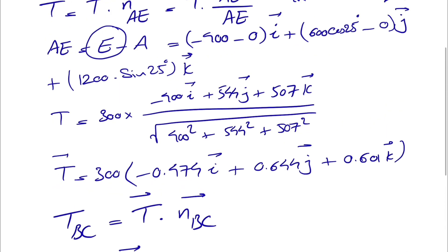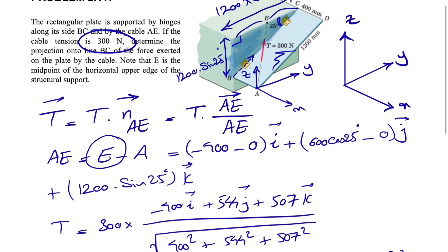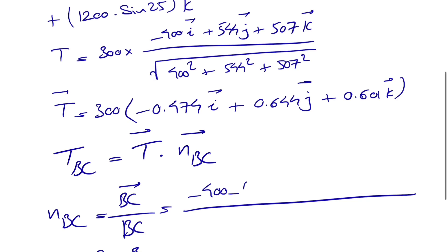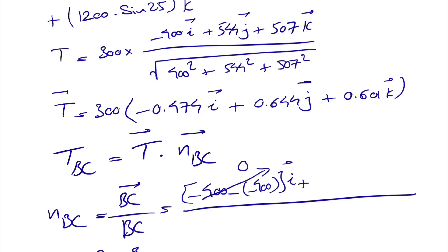Let's start with the x-component of point C. If we look, x of B and C are the same since they are in the yz-plane. So x_C minus x_B is minus 400 minus (minus 400), which equals 0. There is no x-component, as expected.